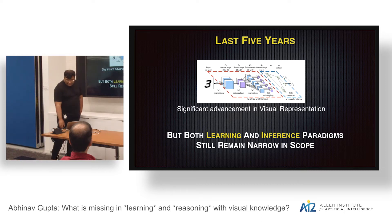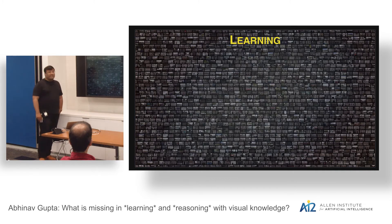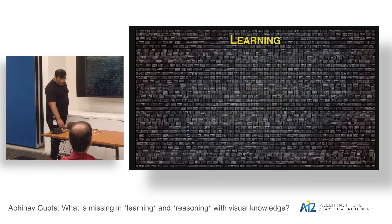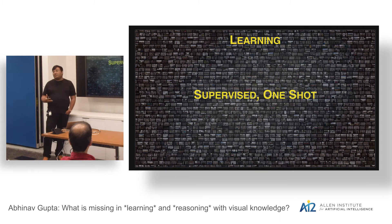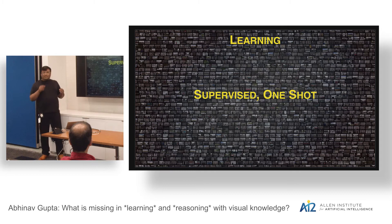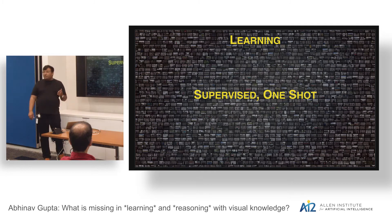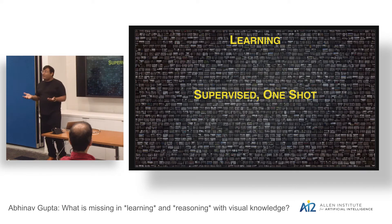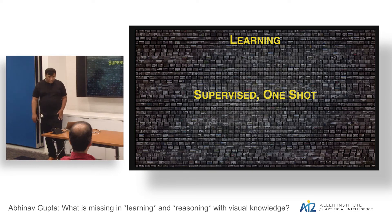Let's look at learning. The way all learning works right now is you collect a large dataset — lots of images — you label those images, and then you do supervised one-shot learning. Supervised because humans are labeling individual objects, scenes, and so on. One-shot because you learn a model, your favorite deep learning model or SVM, and then you forget about it. You do not bring that model back to use for some other task. You train it one time and forget about it.